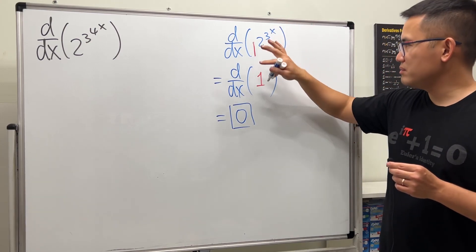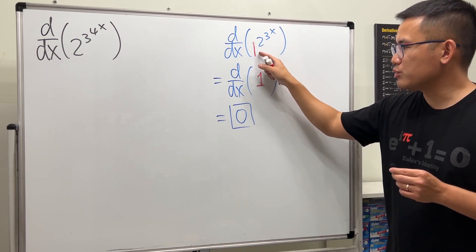You can put x to the third power, sine x here, it doesn't matter. It's just 1 because the very base right here is just 1.